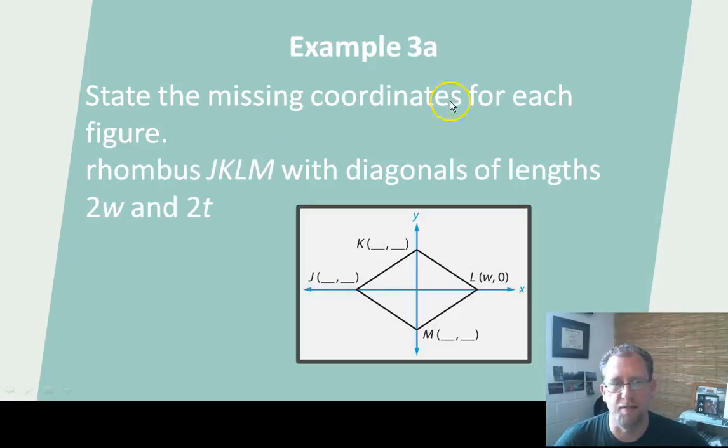Let's do another example here. State the missing coordinates for each figure. Here I know none of these coordinates except for L, and all I know is that it's at W, 0. Well, I can tell you just by the way this diagram is drawn that this is going to be on the Y coordinate. So the X value here is 0, the X value here is 0, and the Y value here is 0 because it's on the axes for those.